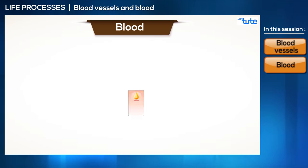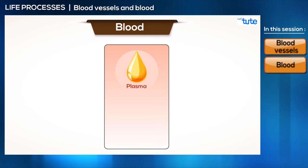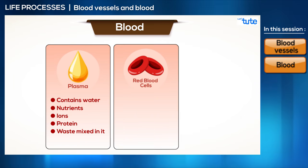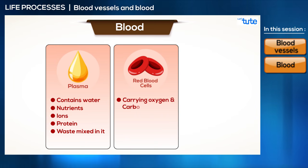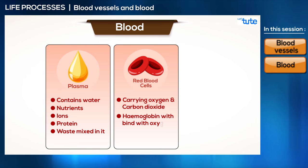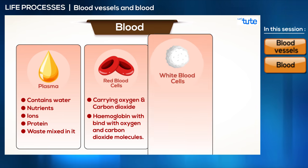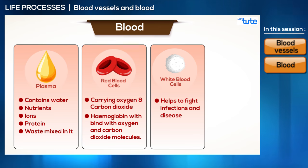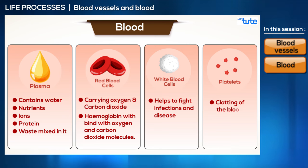Plasma is the main component of blood and contains water, nutrients, ions, proteins, and waste. The RBCs are responsible for carrying oxygen and carbon dioxide — they contain a pigment called hemoglobin which binds with oxygen and carbon dioxide molecules. The WBCs are part of the body's defense system and help to fight infections and diseases. Platelets help in the clotting of blood.